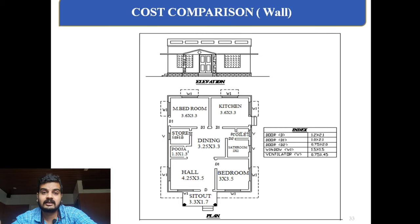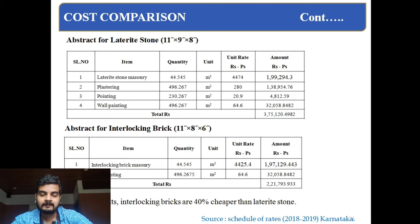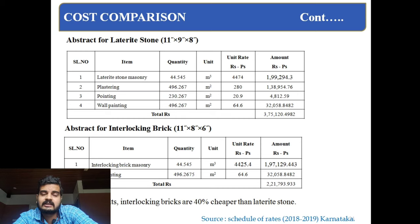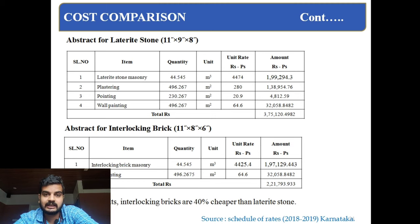I have done a comparison with conventional brick construction and conventional laterite stone wall construction for a 900 square feet house. This comparison is only for walls. In the cost comparison, laterite stone masonry of size 11×9×8 inches requires pointing and plastering, then painting. Interlocking bricks require no pointing or plastering. Using schedule of rates from Karnataka 2018–19, I observed that interlocking brick walls are approximately 40% cheaper than laterite stone masonry walls.